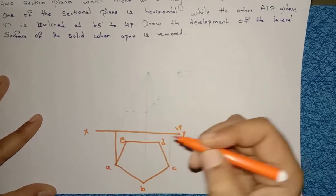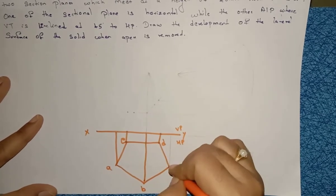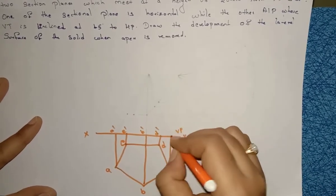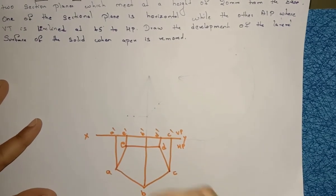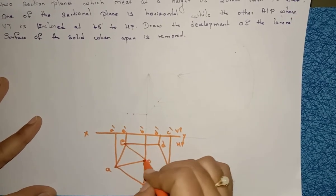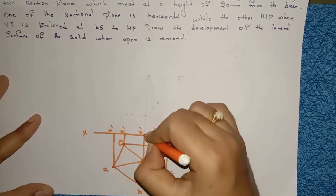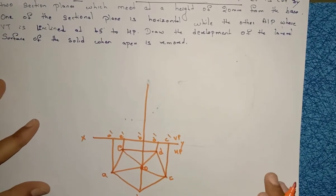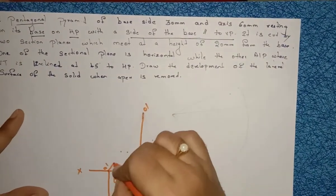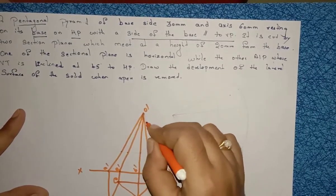Project all points from A, B, C, D, E to the reference line. Name the front view points as A dash, E dash, B dash, D dash, and C dash. Mark the midpoint of the pentagon as O, then join A to O, E to O, D to O, and C to O. The axis height is 60 mm — take that height and name the apex as O dash. Join O dash to E dash, O dash to D dash, and O dash to C dash.